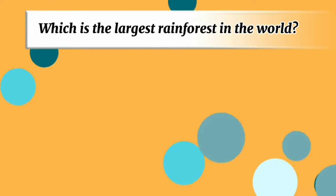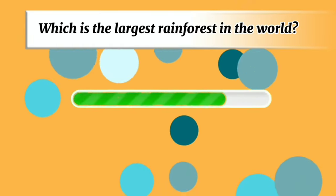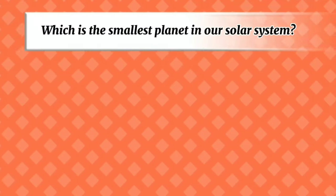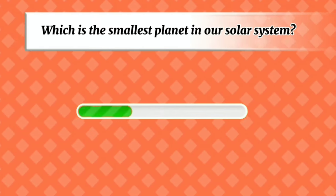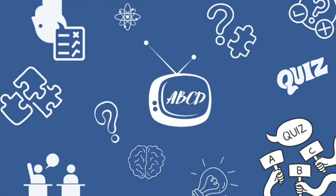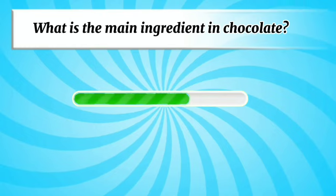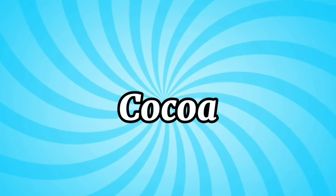Which is the largest rainforest in the world? Amazon Rainforest. Which is the smallest planet in our solar system? Mercury. What is the main ingredient in chocolate? Cocoa.